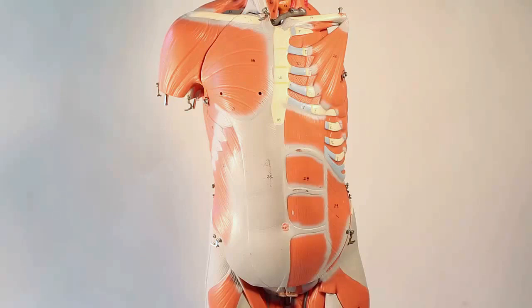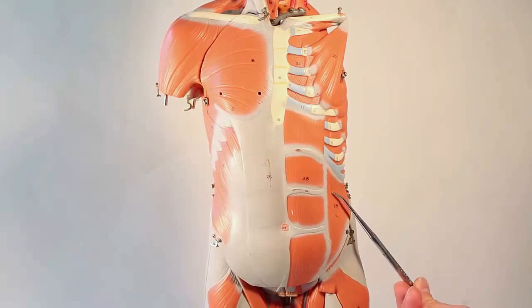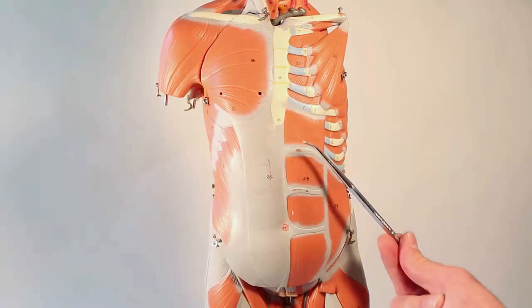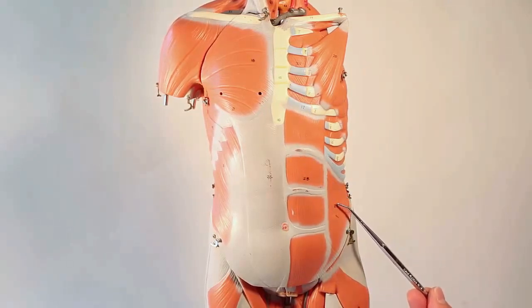Compare those external obliques to the internal obliques right here. Now look at the fiber direction. The internal obliques are deeper. They're going to be part of the second or middle layer of muscles. The fibers are running in this direction. So if you follow them through, they're running up towards the midline. The internal oblique.